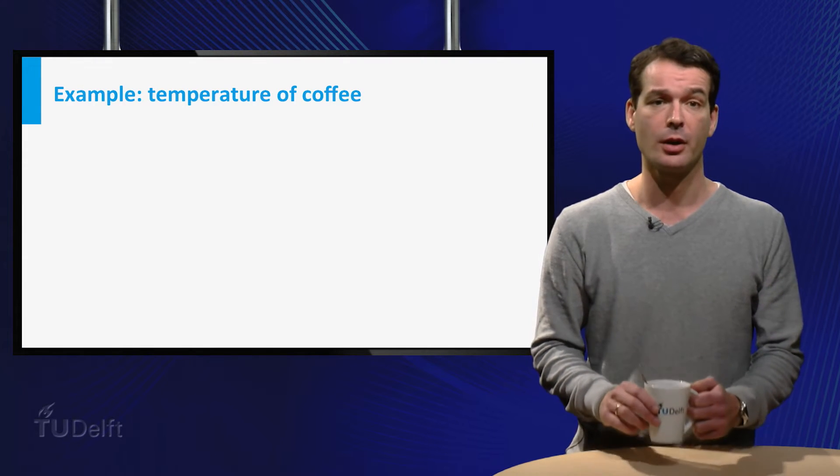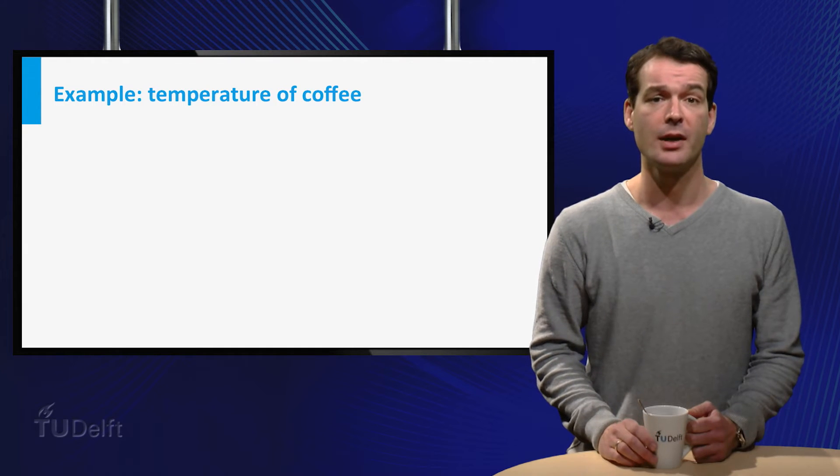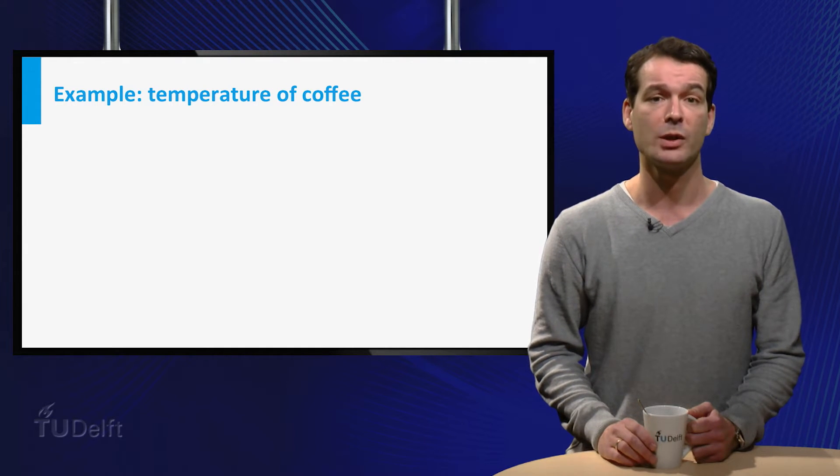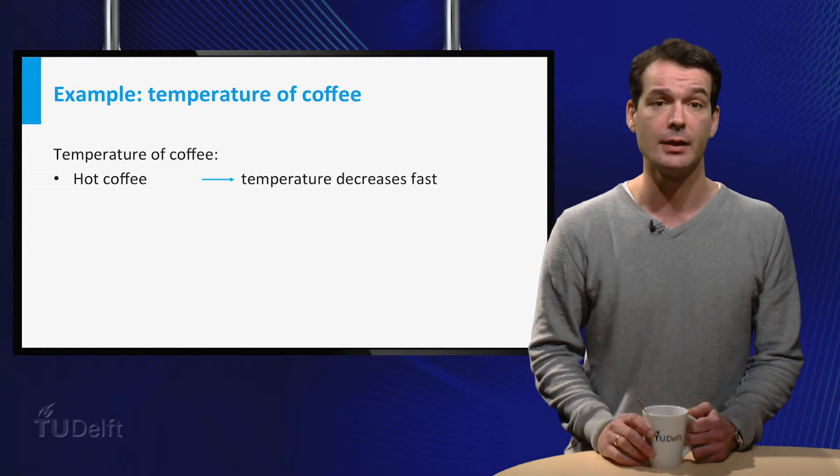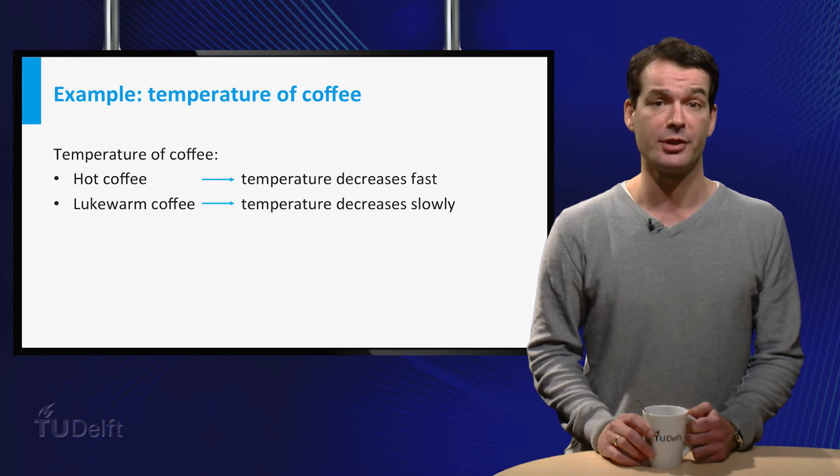Suppose I want to describe the temperature of the coffee in this cup as a function of time. What do we know about this function? Well, we know that if the coffee is very hot, it cools down fast. And if the temperature of the coffee is just above room temperature, it cools down at a slow rate.